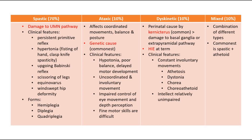The spastic type is due to damage to the upper motor neuron pathway. Clinical features include hypertonia, where the patient may have fisting of the hand, clasp-knife spasticity, and an extensor Babinski reflex. There may also be scissoring of the legs, equinovarus foot deformity, and windswept hip deformities, which are classic signs seen in spastic cerebral palsy. Forms of spastic cerebral palsy include hemiplegia, diplegia, and quadriplegia.